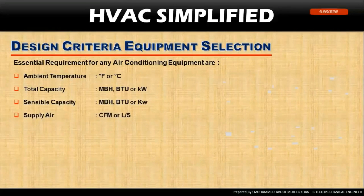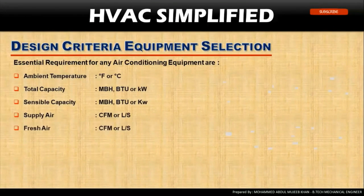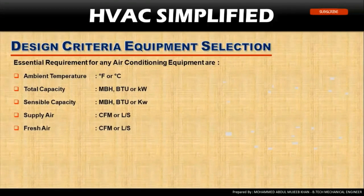Supply airflow is measured in CFM or liters per second. There are other units as well, but these two are the most widely used. Fresh air flow is also measured in CFM and liters per second.